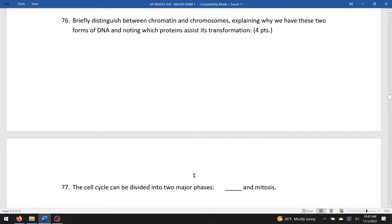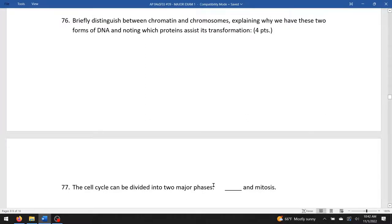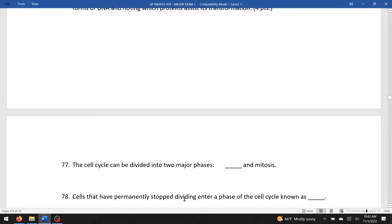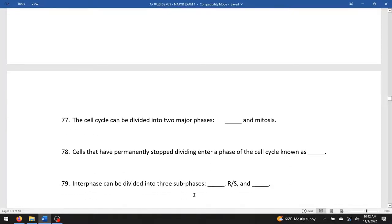Cell cycle can be divided into two major phases: interphase, which is the biggest part, and mitosis. Cells that have permanently stopped dividing enter a phase of the cell cycle known as G0. Interphase can be divided into three sub-phases: G1, replication of DNA or synthesis of DNA, and G2.